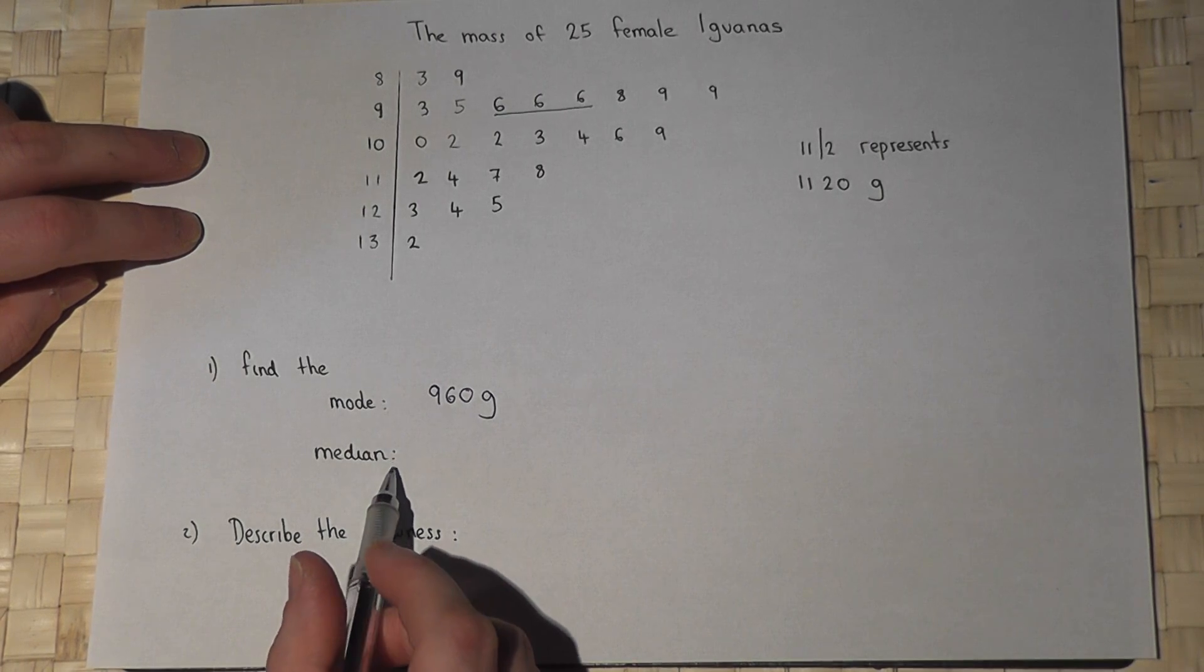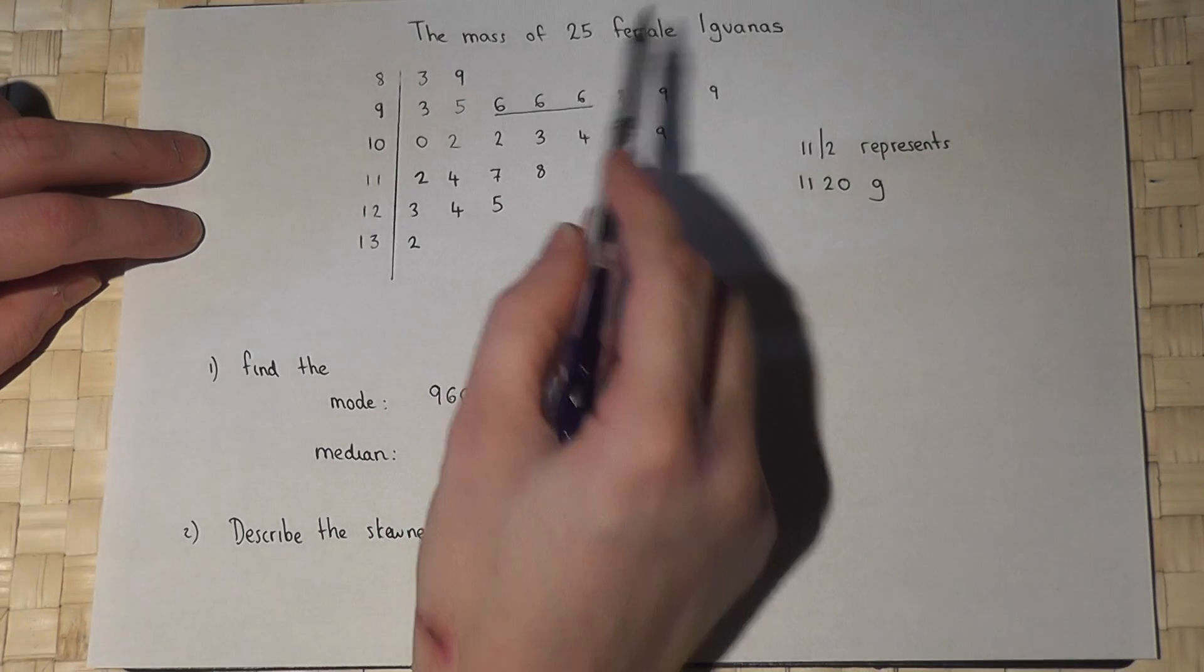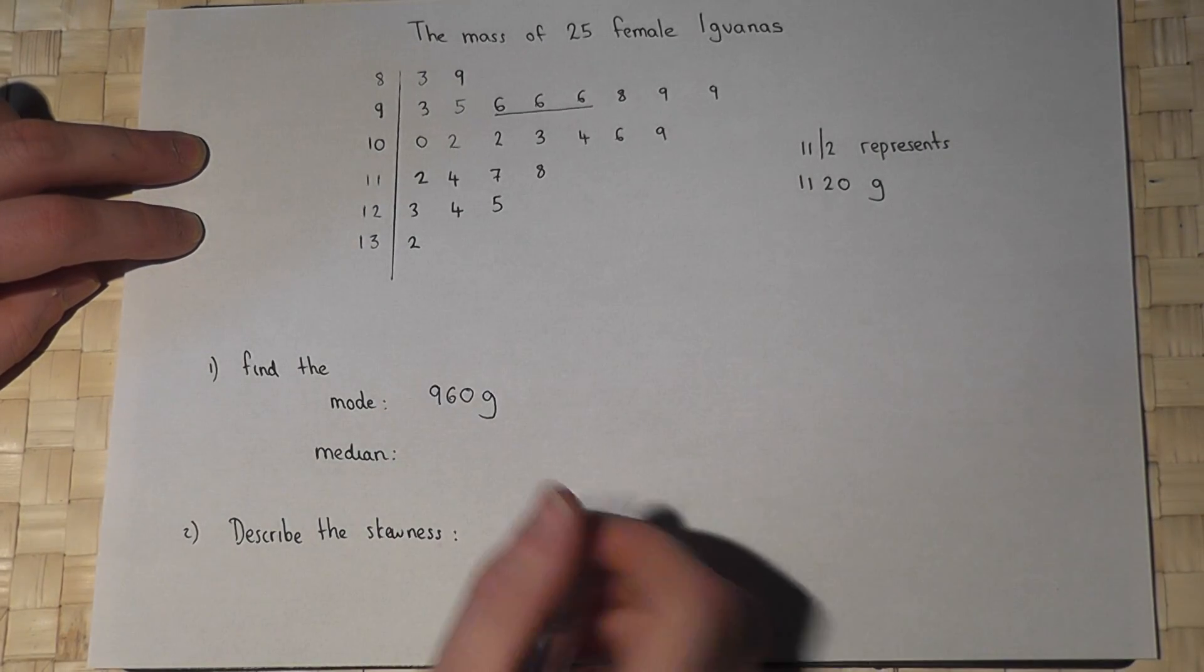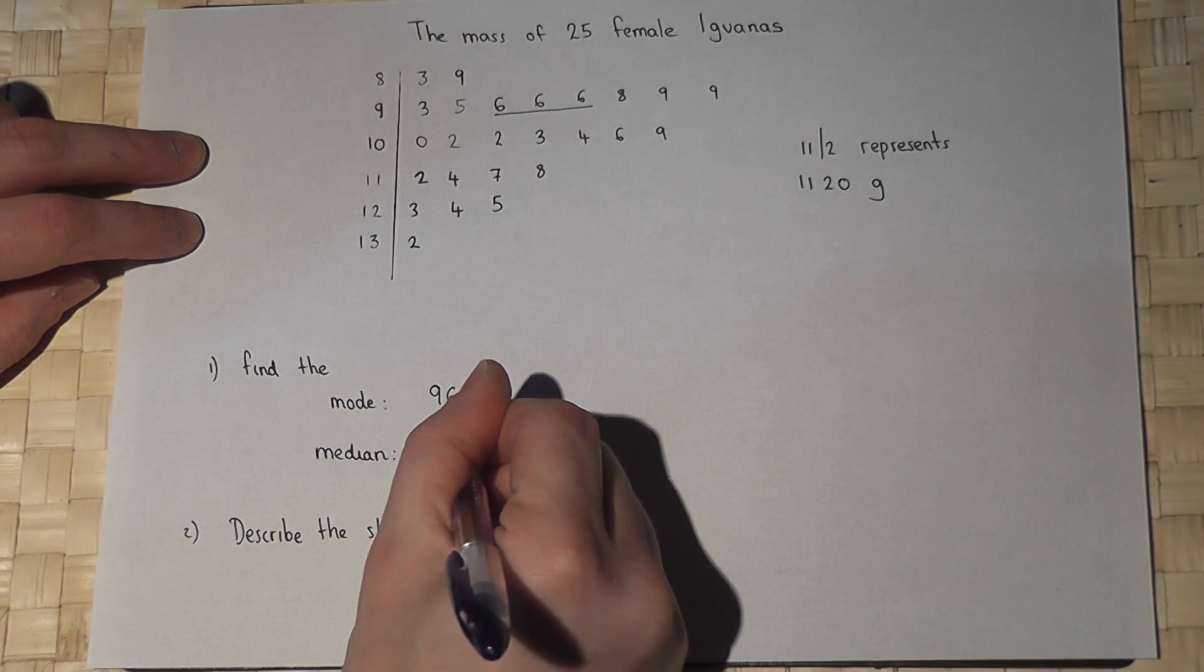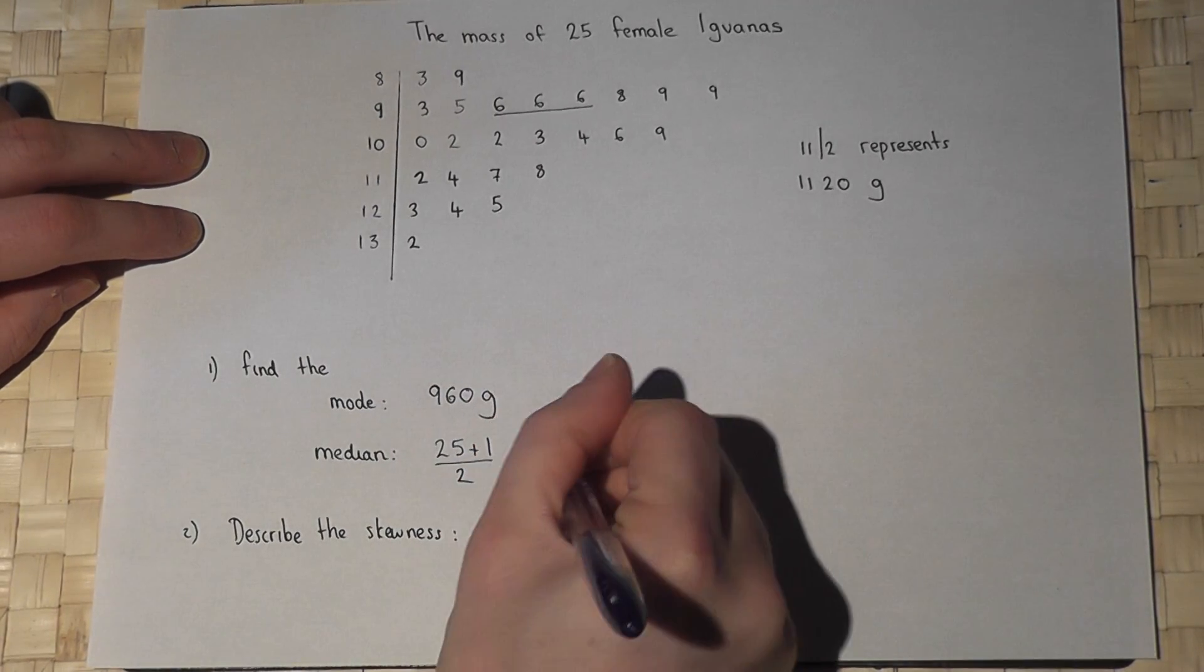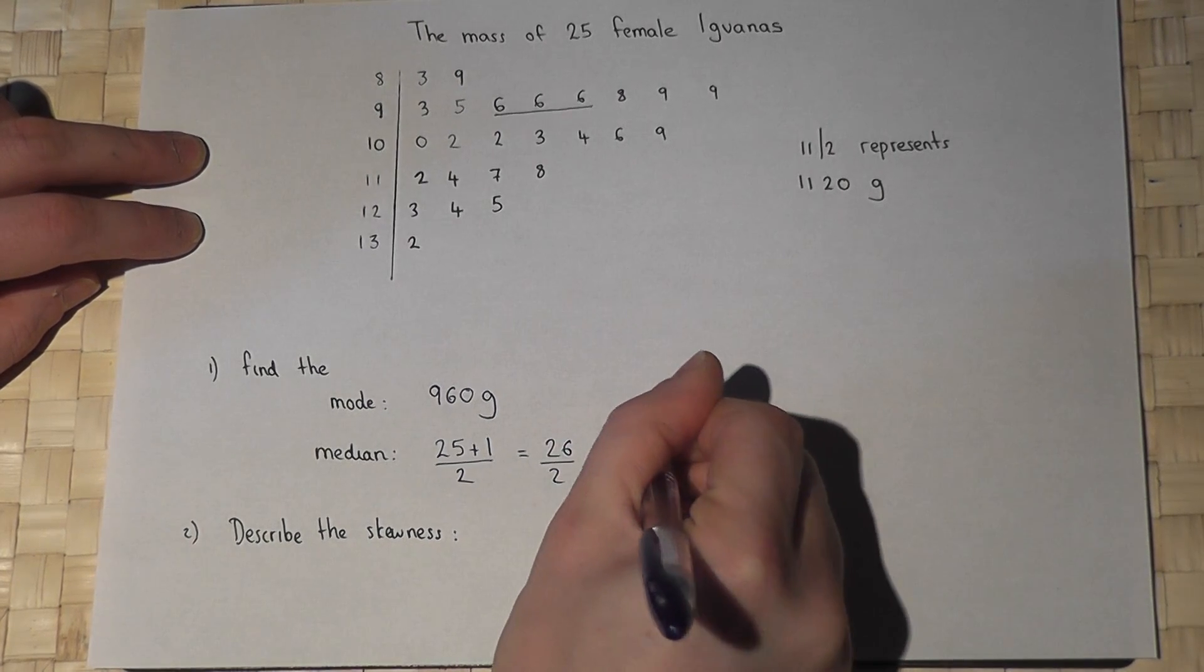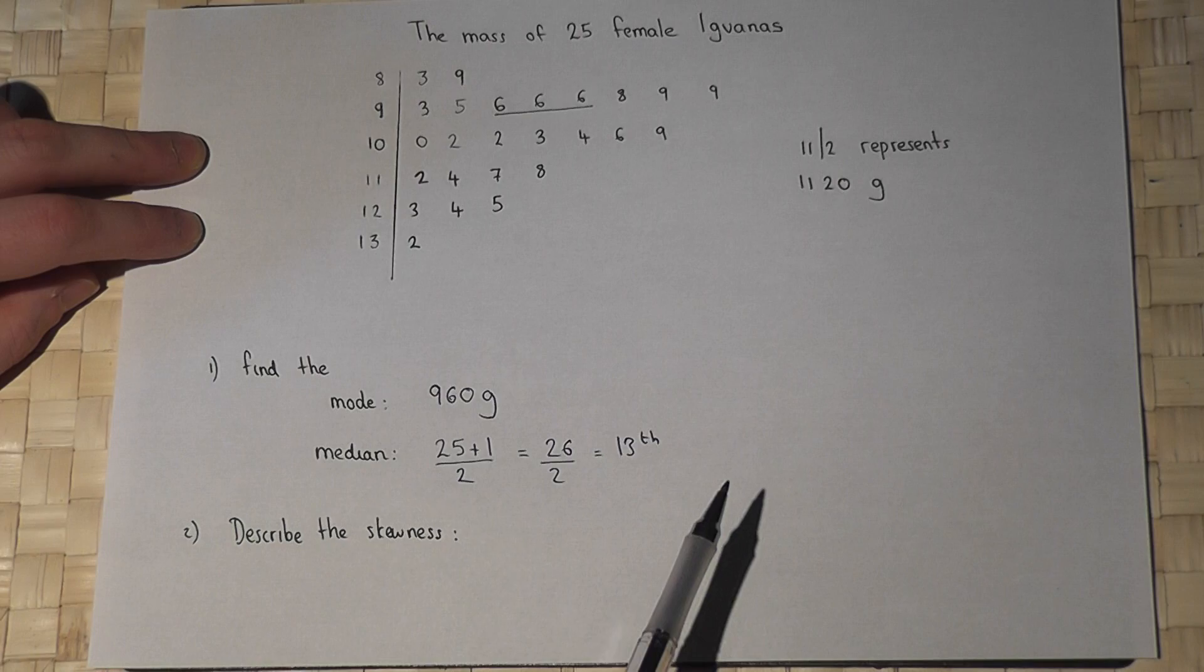Now the median is the middle value. To find this, we know there are 25 female iguanas. We do 25 plus 1 divided by 2, which is 26 over 2, which is the 13th number in the stem and leaf diagram.